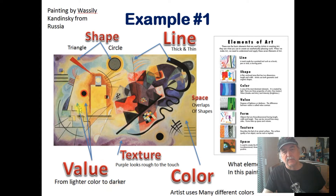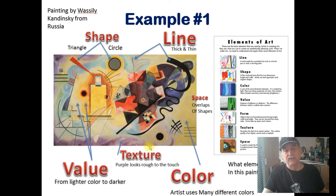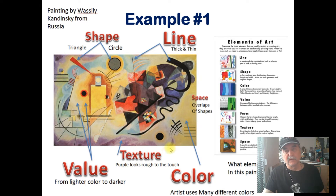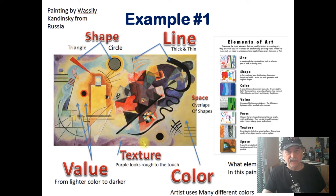We can move on to texture — the purple here looks rough. Is it actually rough to the touch? Well, we don't know that because we're not running our finger along the artwork. If it is ours we could do that, or take a closer look at the painting. And then we have color — this particular artist used many colors.